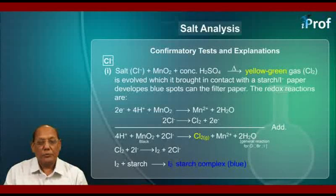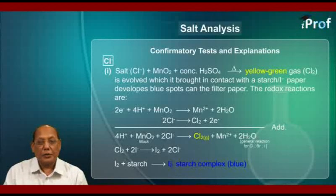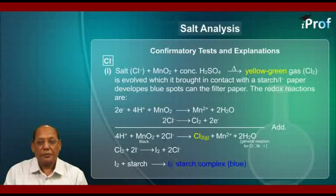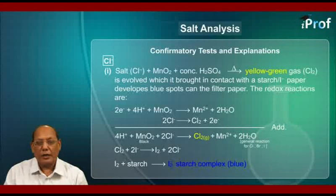Adding the two half-reactions, we get: 4H⁺ + MnO2 (that is a black substance) + 2 chloride ion. On heating, we get Cl2 gas, that is a yellow-green gas, plus Mn²⁺, plus 2H2O. In fact, we can consider this to be a general reaction for chloride ion, bromide ion, and iodide ion.